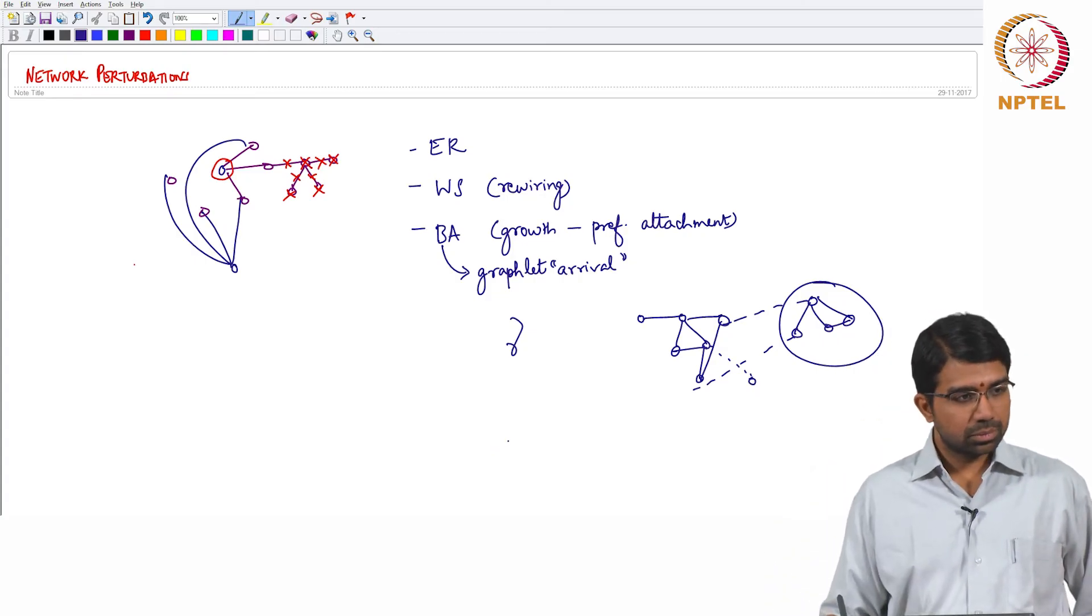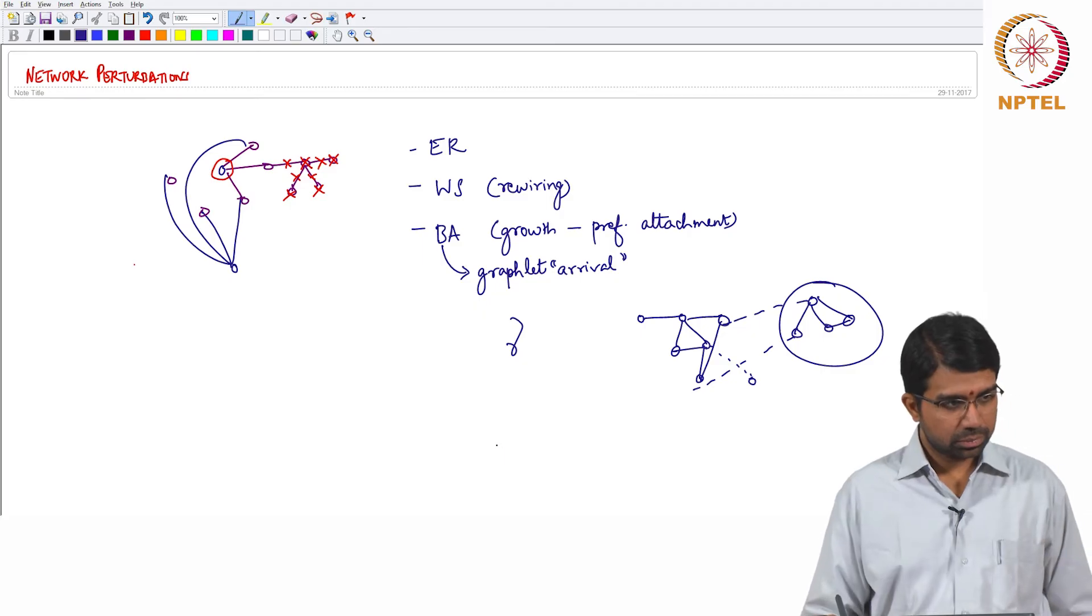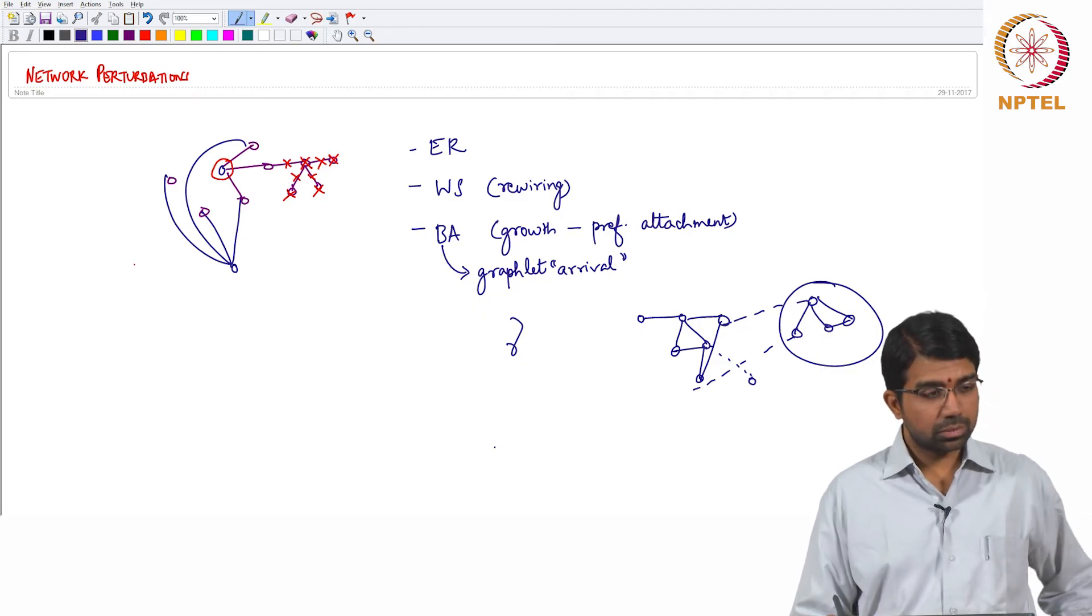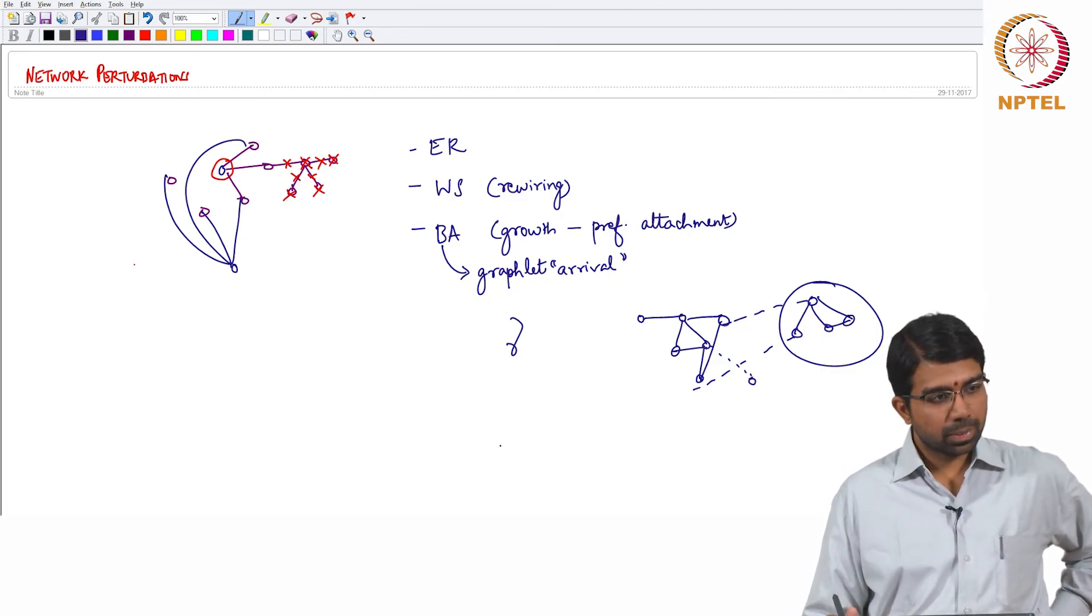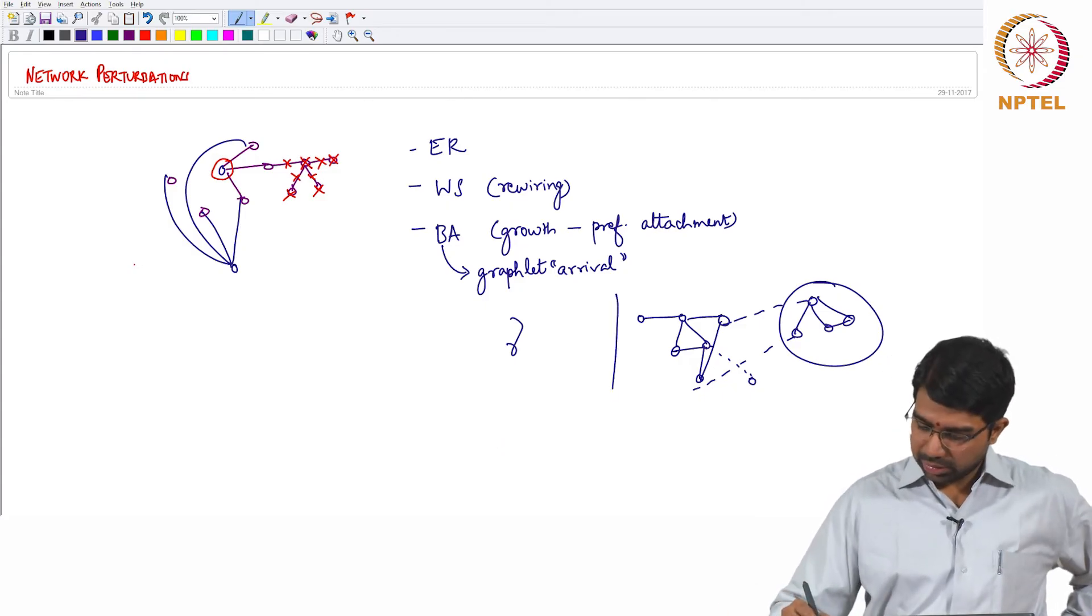Downstream in the network gets added with the upstream network. So that changes the function of the upstream network. Yes, so that retroactivity that is also a sort of perturbation. So that's why I mentioned this.